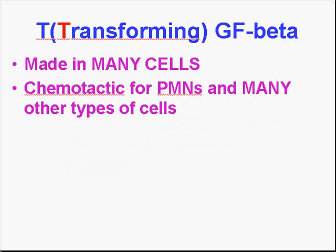Transforming growth factor beta, as opposed to alpha, is made by many, many cells. The beta transforming growth factor is chemotactic for PMNs or neutrophils and many other types of cells. So in that sense, could this cytokine also be regarded as a chemokine? Probably could.